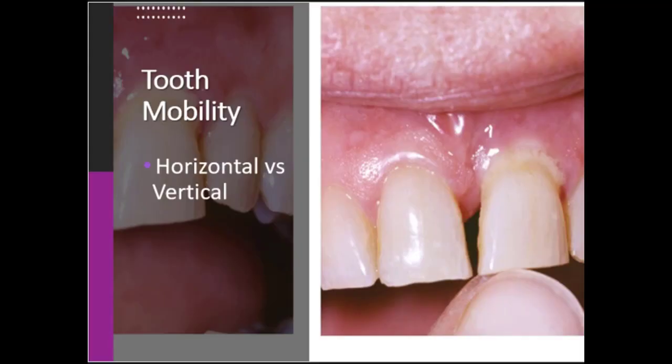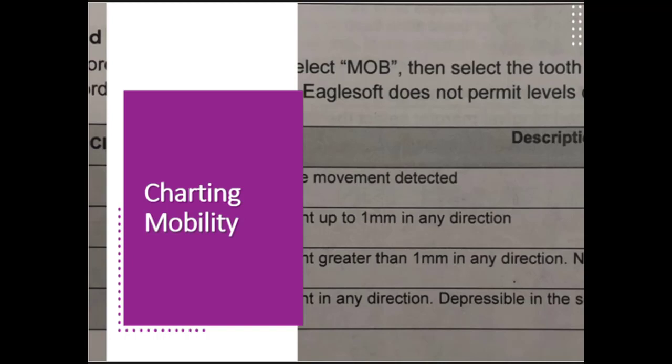It's much more common to see horizontal mobility in a patient than vertical mobility. If we use an adjacent tooth as a reference point we can assess vertical mobility against a more stable tooth when available. Horizontal mobility refers to a tooth that moves more than one millimeter facial to lingual, while vertical mobility refers to a tooth that moves up and down inside the tooth socket. Generally when we see vertical mobility it's on a tooth with advanced periodontitis.